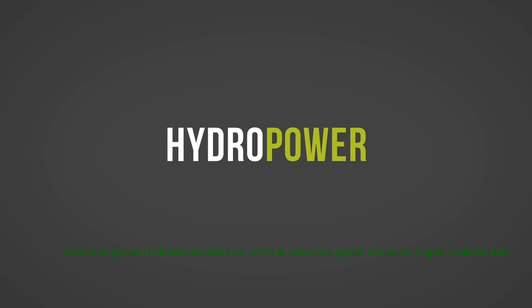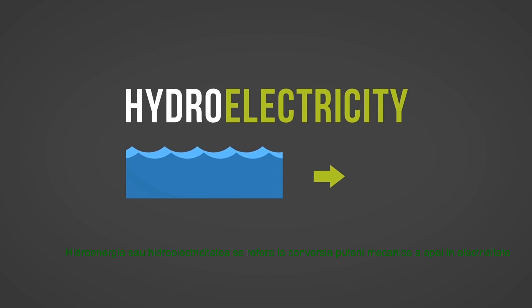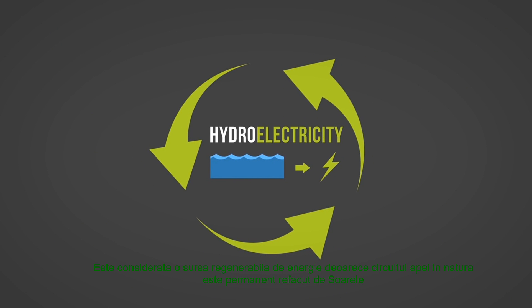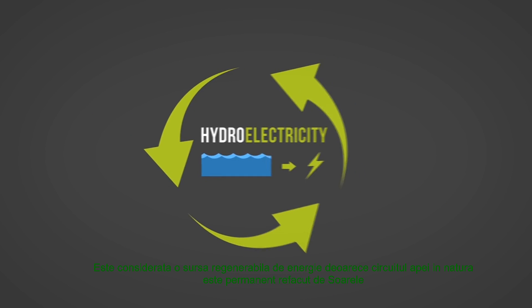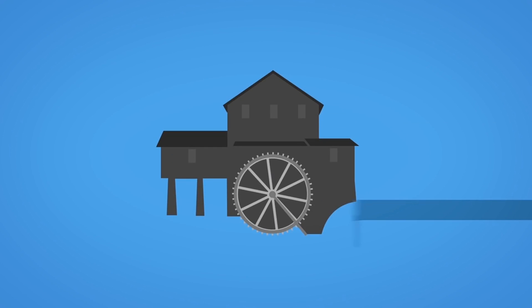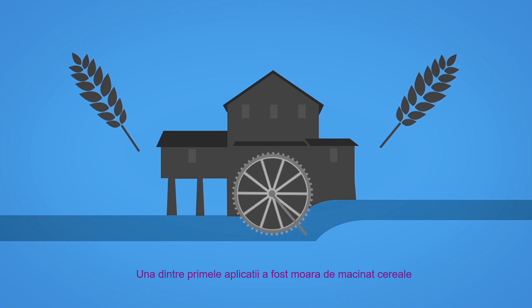Hydropower, or hydroelectricity, refers to the conversion of energy from flowing water into electricity. It is considered a renewable energy source because the water cycle is constantly renewed by the sun. One of the first uses of hydroenergy was for mechanical milling, such as grinding grains.